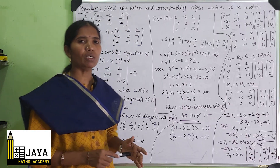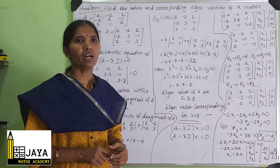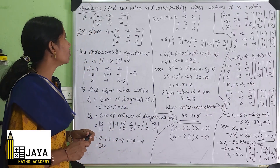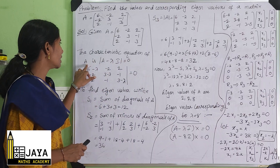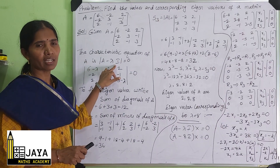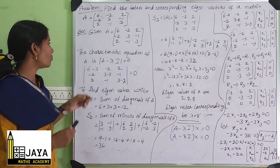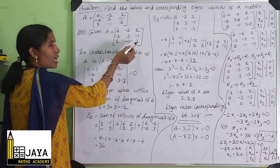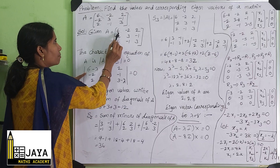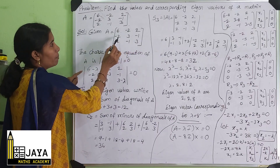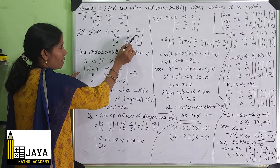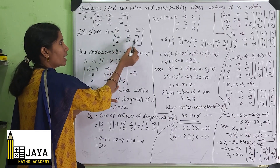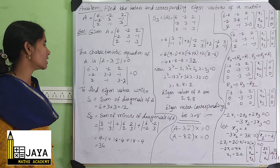First we want to find the eigenvalues and then the eigenvectors of matrix A. To find the eigenvalues, the characteristic equation is det(A - λI) = 0. For the diagonal elements, minus λ will come, so det of [[6-λ, -2, 2], [-2, 3-λ, -1], [2, -1, 3-λ]] = 0.